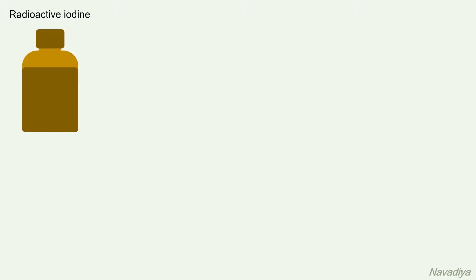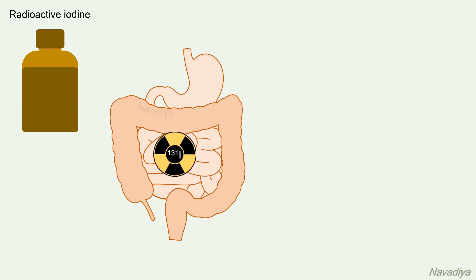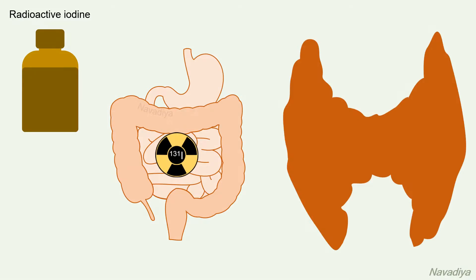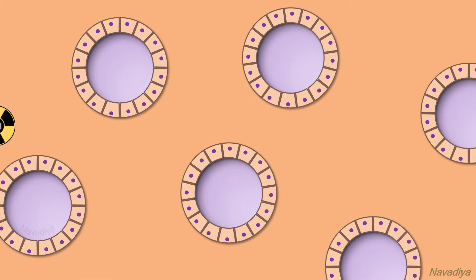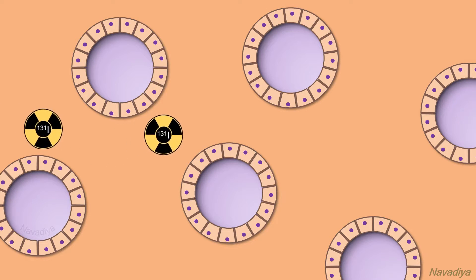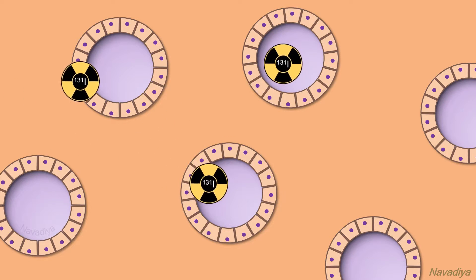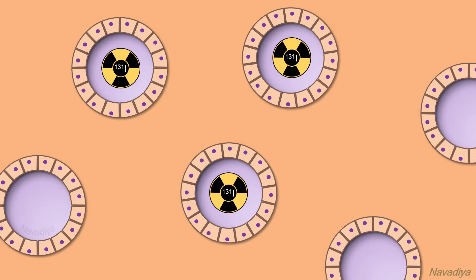It is commonly available as a solution which is given orally. After absorption it goes to the thyroid gland, where the radioactive iodine accumulates in the thyroid follicle, same as a stable isotope does.